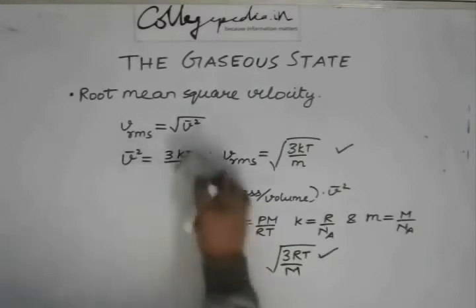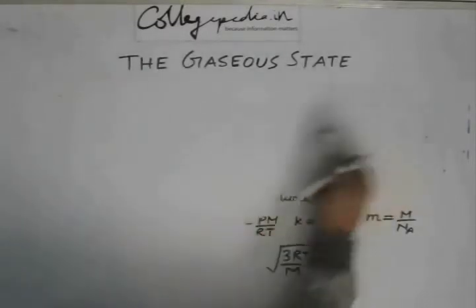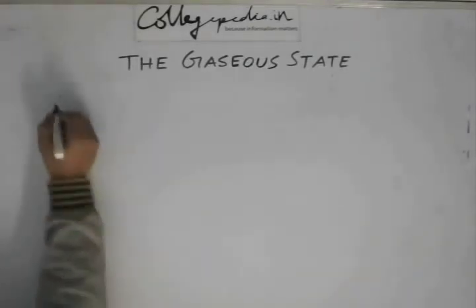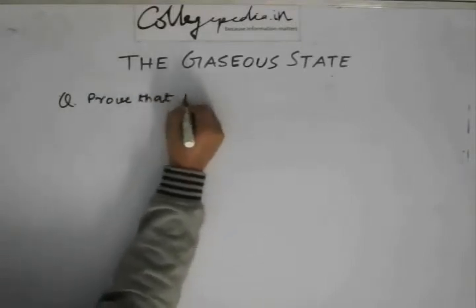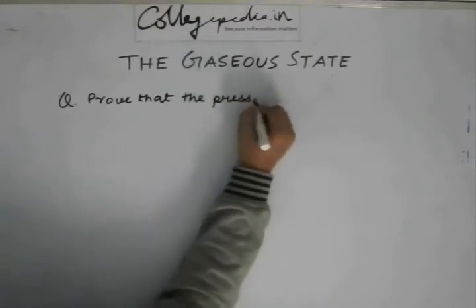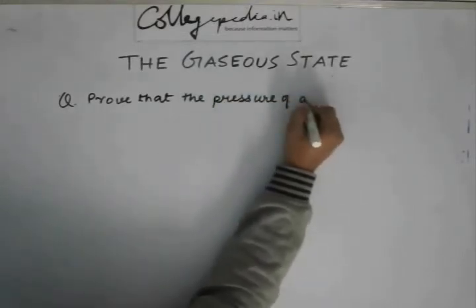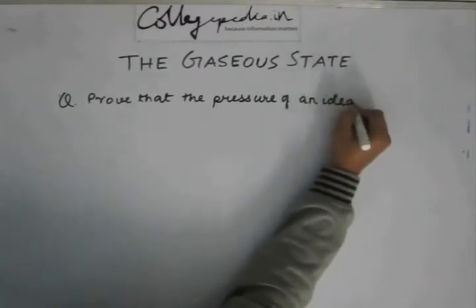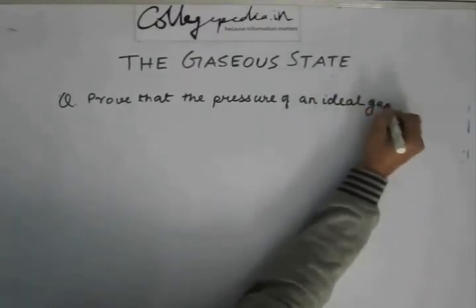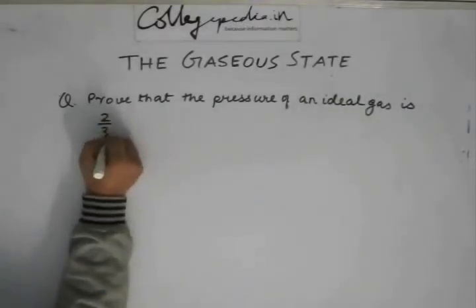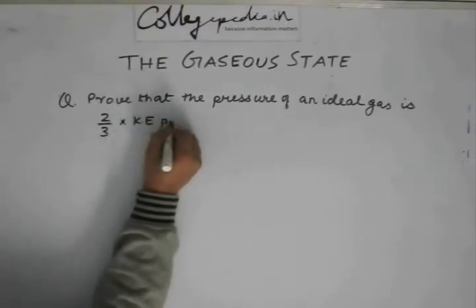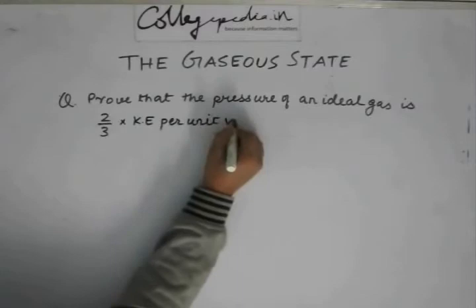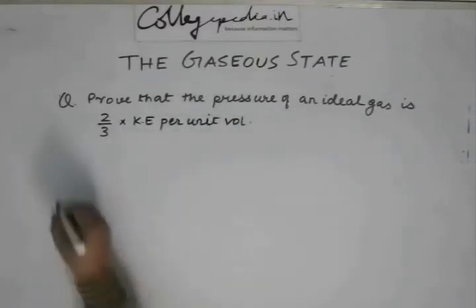Let us solve a small question on this. We need to prove that the pressure of an ideal gas is 2 by 3 times the translational kinetic energy per unit volume. This is what we need to prove.